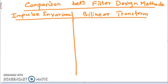Here I would like to mention a few comparisons between the methods we have discussed earlier — that is the impulse invariance method and the bilinear transformation method — and what type of effects they can produce in filter design.